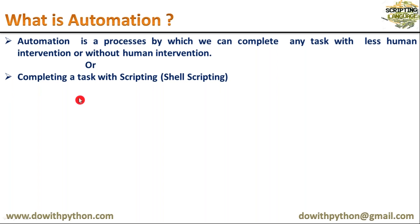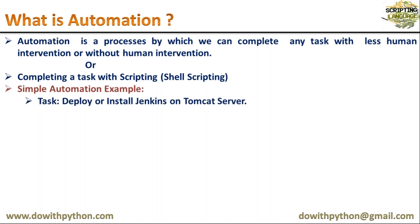Now we are going to see a simple example to automate a task. The task is to deploy or install Jenkins on a Tomcat server. In a DevOps context, if you want to run Jenkins, one procedure is to install Tomcat and then deploy your Jenkins app on top of Tomcat. We are going to automate this task.